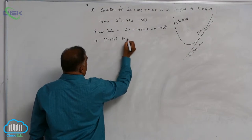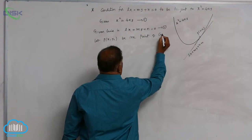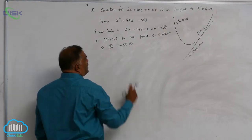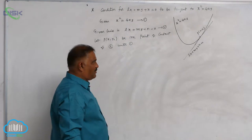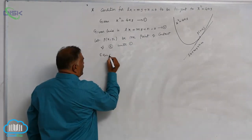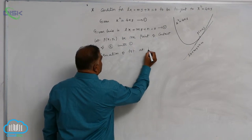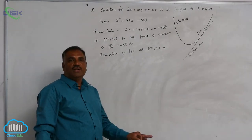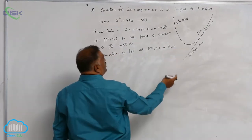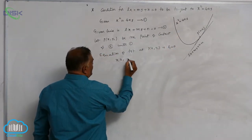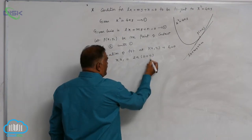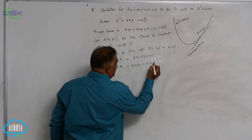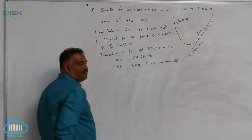Let P(x1, y1) be the point of contact of the line with the parabola x² = 4ay (equation 2). In general, for any curve, the equation of tangent at point P(x1, y1) is S1 = 0. Writing S1 = 0 for this parabola gives: xx1 = 2a(y + y1), or bringing all terms to one side: xx1 − 2ay − 2ay1 = 0. This is equation 3.